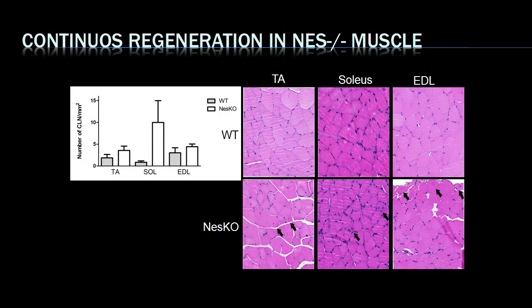Looking at muscles from different parts of the body — these are active muscle groups — one clear indicator of regeneration is nuclear positioning. A nucleus positioned in the middle of the fiber means it's still undergoing differentiation. In the wild type (upper lane), across all muscle groups, we have no fibers with centrally positioned nuclei. In the nestin knockout mice, it's easy to find fibers with centrally positioned nuclei, indicating active turnover in those fibers.